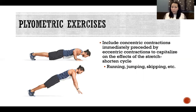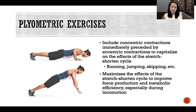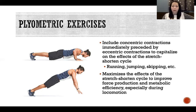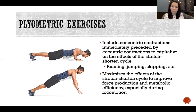Any break in between and you lose that effect. What gives us the stretch-shorten cycle effect is the movement into the eccentric, then immediately into the concentric with no isometric hold in between. It maximizes force production and metabolic efficiency, and that is especially true during locomotion. We become more efficient in a running or skipping gait compared to walking, because in running or skipping we're taking advantage of the stretch-shorten cycle, whereas in walking we are not.